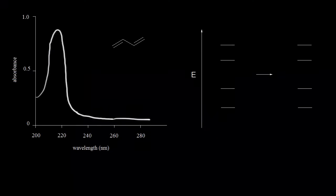Different molecules can absorb different wavelengths of light. If a molecule happens to absorb light in the ultraviolet or the visible region of the electromagnetic spectrum, we can find the wavelength or wavelengths of light absorbed by that compound using a UV-Vis spectrophotometer. It shines light with a range of wavelengths — approximately 200 nanometers up to 800 nanometers — through a sample of the compound, and you get an absorption spectrum.